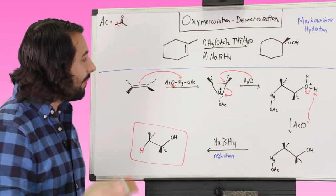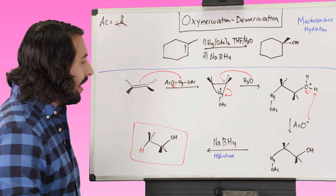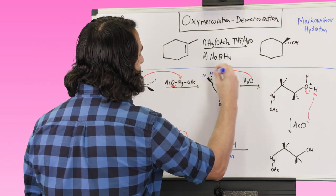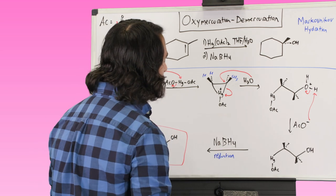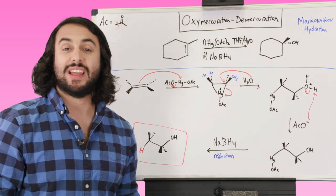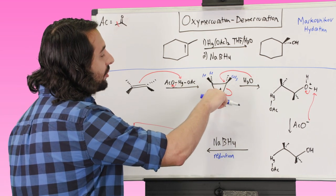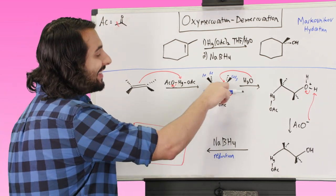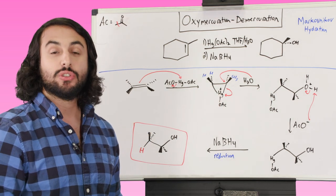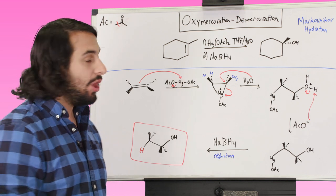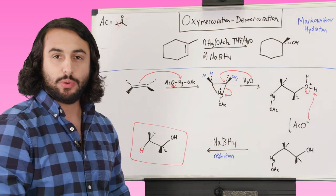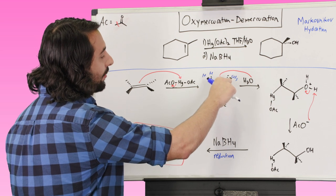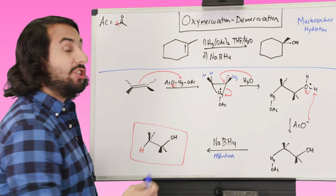Just a couple of key points. In terms of the regiochemistry, this is very similar to halohydrin formation. If that were a methyl over there, this would be the more substituted carbon. This mercurinium ion intermediate — this sigma bond is going to come apart a little more than the other one, in an attempt to slightly neutralize that positive mercury atom, just like a bromonium ion intermediate where one of those bonds can come apart more easily. If water comes here, this is going to be the more partially positive carbon due to that electronic effect. That's where the regiochemistry comes from.